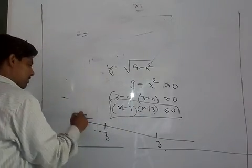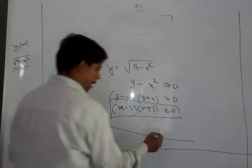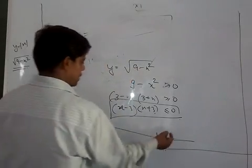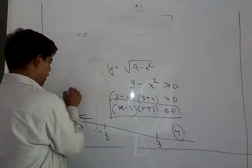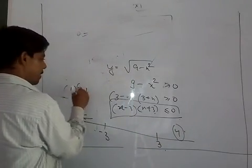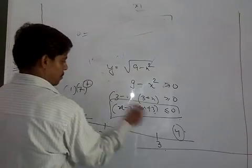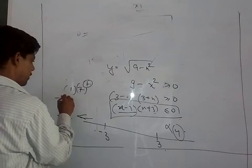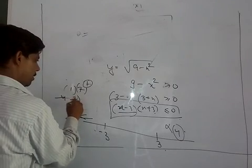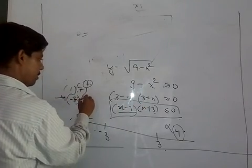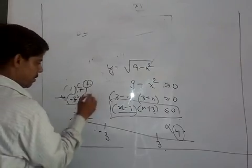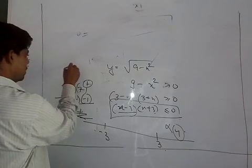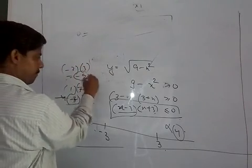This is valid beyond certain points. We need to check values. Take any number in between, like 0. Zero gives minus 3 times 3, which is minus 9, negative.